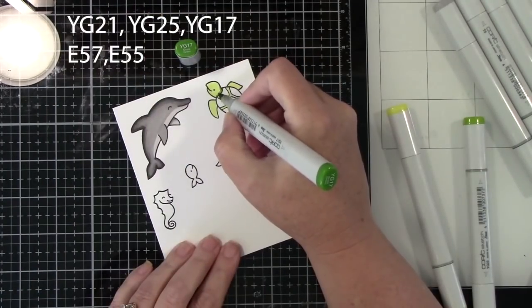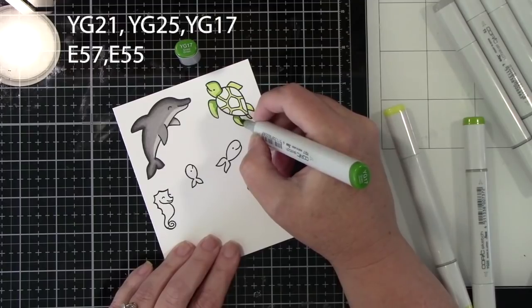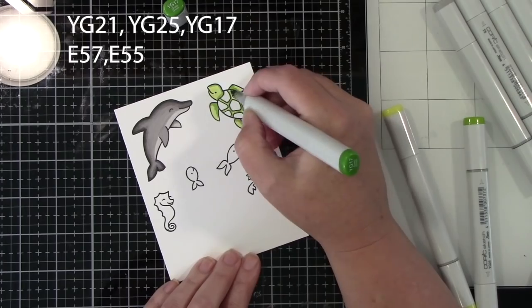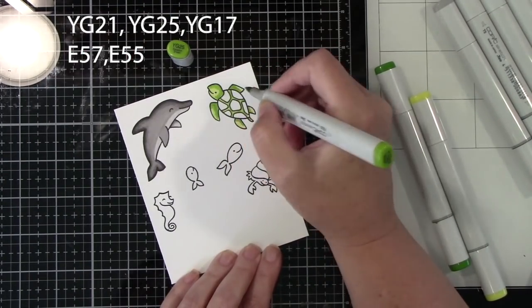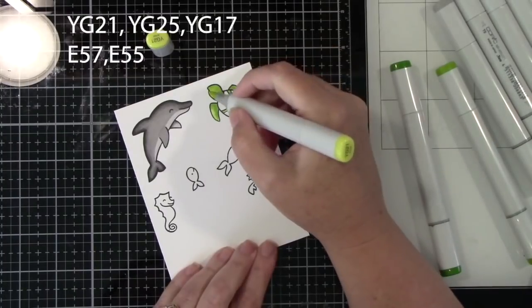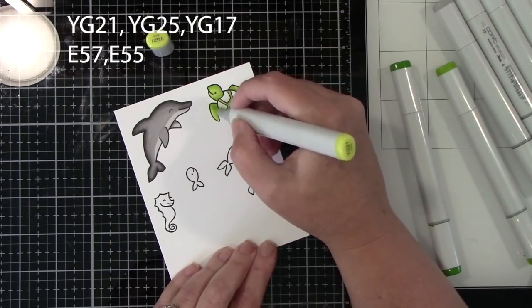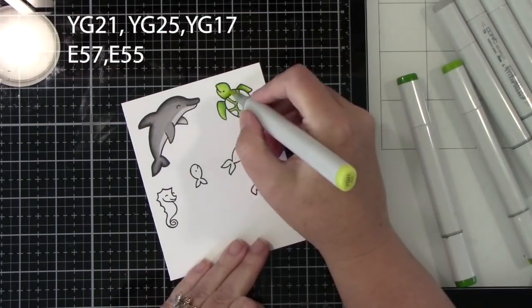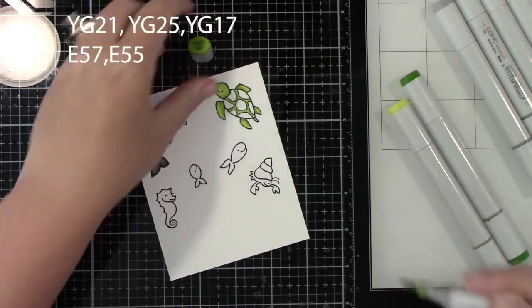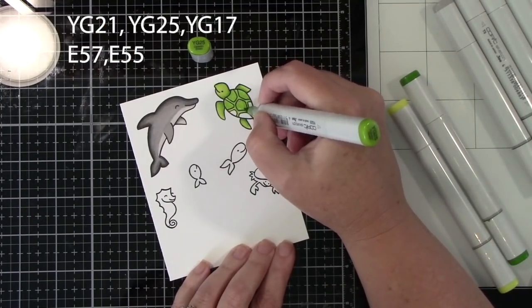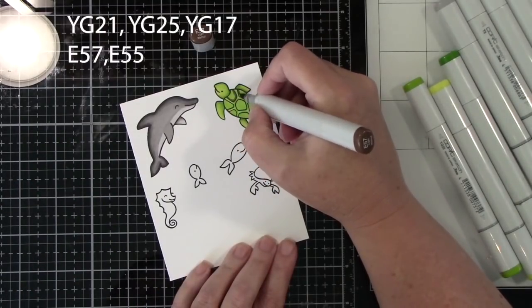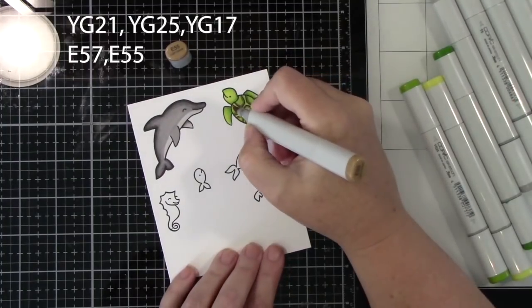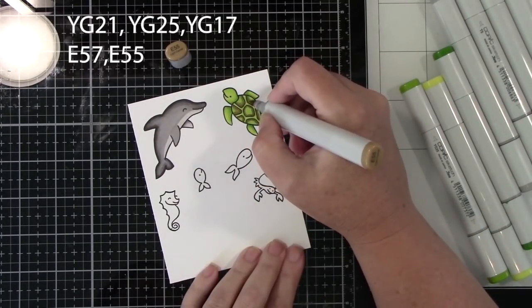Now for this little cute turtle. We are using YG21, 25, and 17. And then E57 and E55. I was Googling what really sea turtles look like. And they really have actually a lot of brown on them. So I'm just doing this green base basically on his body and in between those larger spots on his shell. Adding a little bit of green to the shell. And then I'm going to come in with the E55 and 57 on those larger spots because they're kind of a greenish brown color. And so I really do love the way he turned out. And he is such a cute little guy.